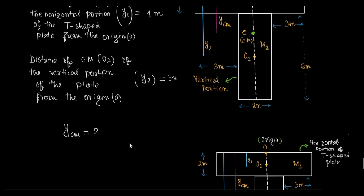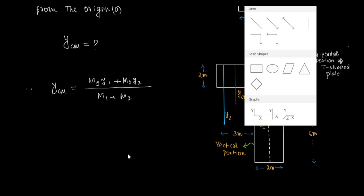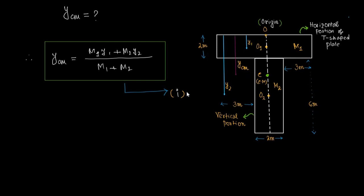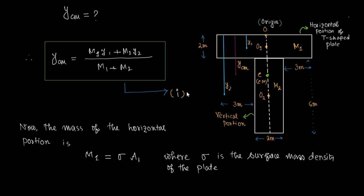We need to find ycm, the distance of center of mass C from the highest point O. The formula is: ycm equals (M1·y1 + M2·y2) divided by (M1 + M2). The mass of the horizontal portion is M1, which equals sigma times A1, where sigma is the surface mass density of the plate and A1 is the area of the horizontal portion.